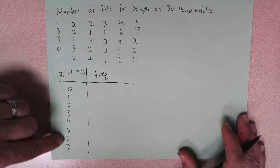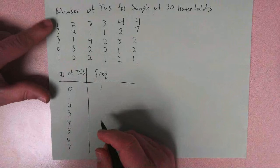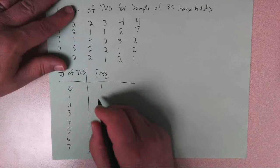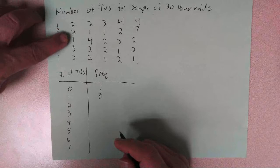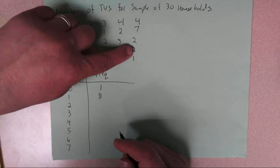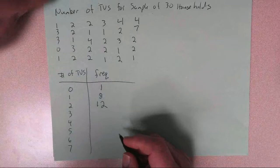So 0, there's only 1, so this would be 1. For 1, I got 1, 2, 3, 4, 5, 6, 7, 8. So I got 8 for 1. Now for 2, let's see, I got 1, 2, 3, 4, 5, 6, 7, 8, 9, 10, 11, I think I missed that, 12. So I got 12.